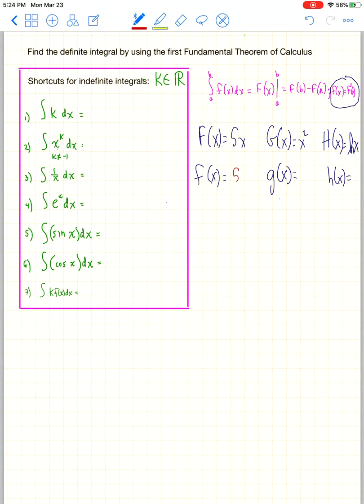So the derivative of 5x is 5. The derivative of x squared is 2x, and the derivative of ln of x is 1 over x.